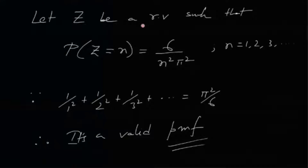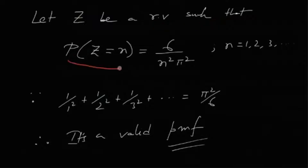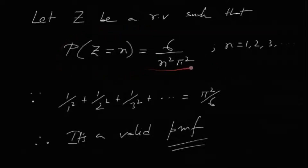First of all, let us define a random variable Z such that the PMF — Z is a discrete random variable which takes the values 1, 2, 3, 4, and so on — it takes positive integral values — and let us define the PMF to be this function. Probability Z equals n is equal to 6 divided by n squared pi squared.